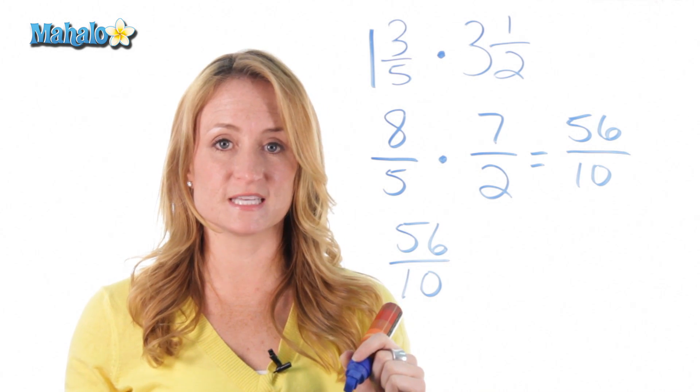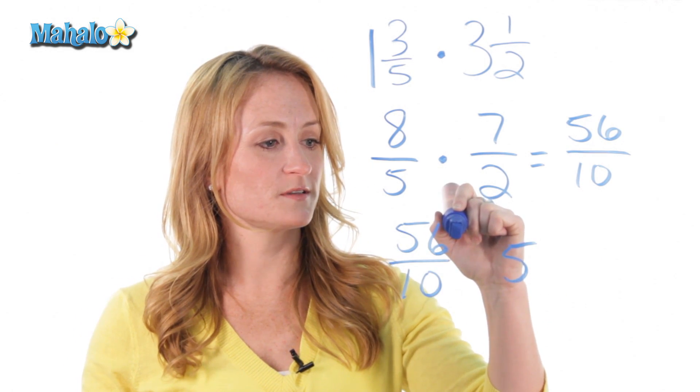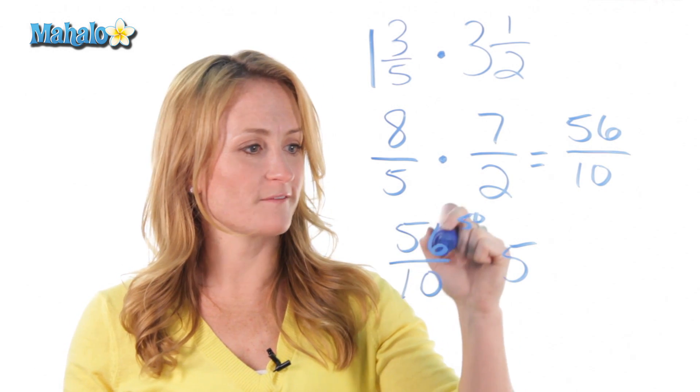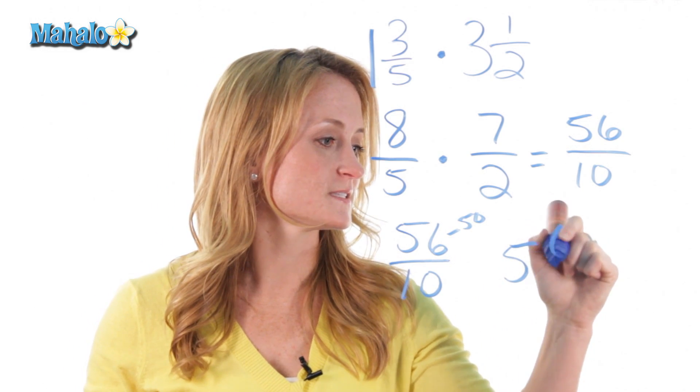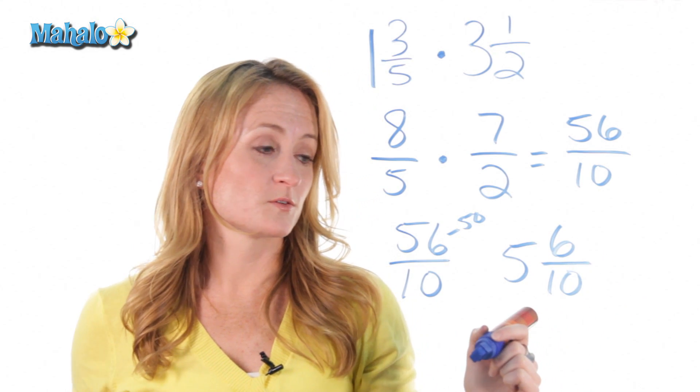So how many times does 10 go into 56? 5 times. And 5 times 10 was 50. So now we need to take that 50 away from that 56. So we're going to subtract, giving us 6 over the denominator.